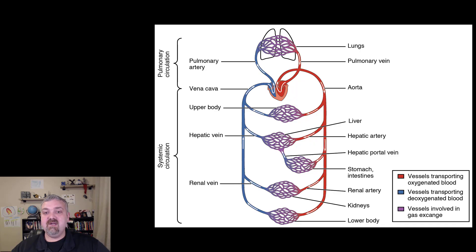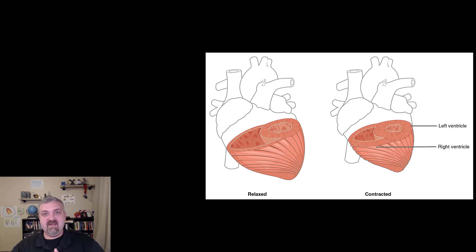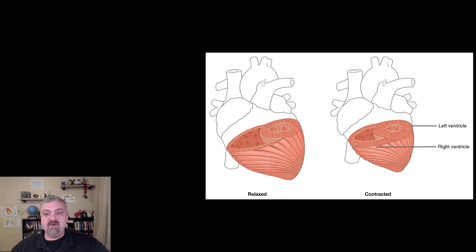One more thing quickly: since the systemic circuit needs a lot more pressure to move blood through your entire body, the left and right ventricles are quite different. The left ventricle is going to be about three times thicker — a much more powerful pump. You'll notice that if you're ever holding a heart when you're dissecting it. Both ventricles do their jobs very well, but just remember the left ventricle is much more powerful than the right.